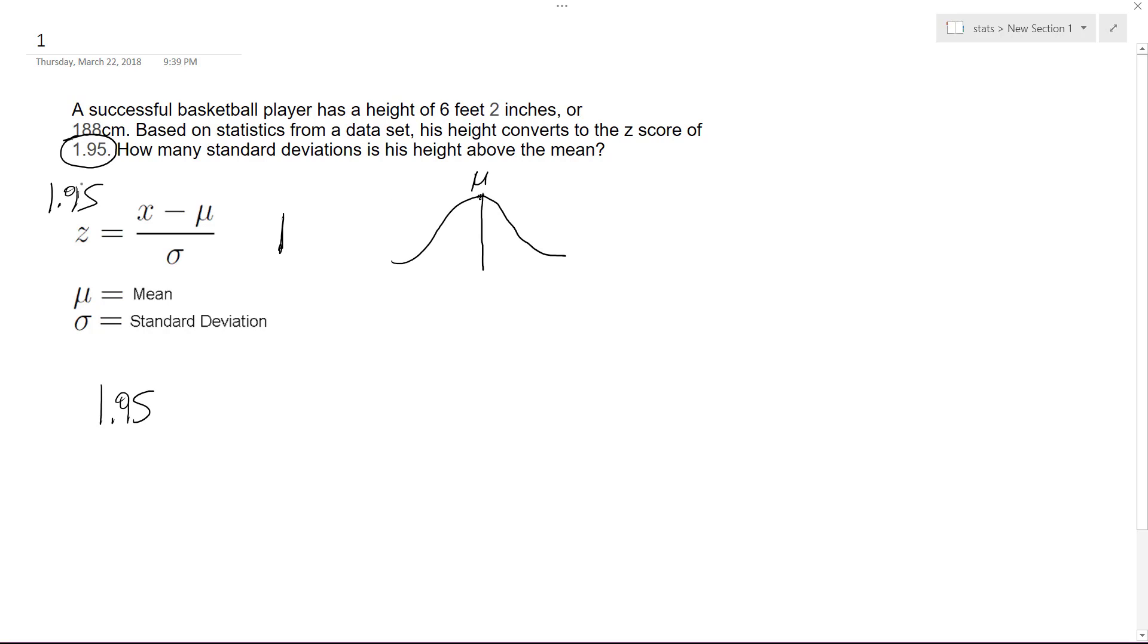But what would normally happen is we'd be given his height and the mean. In this case, let's say his height is 188 centimeters. It would be 188 minus whatever mu is, divided by sigma, and then we get our 1.95. That's how we get our z-score.